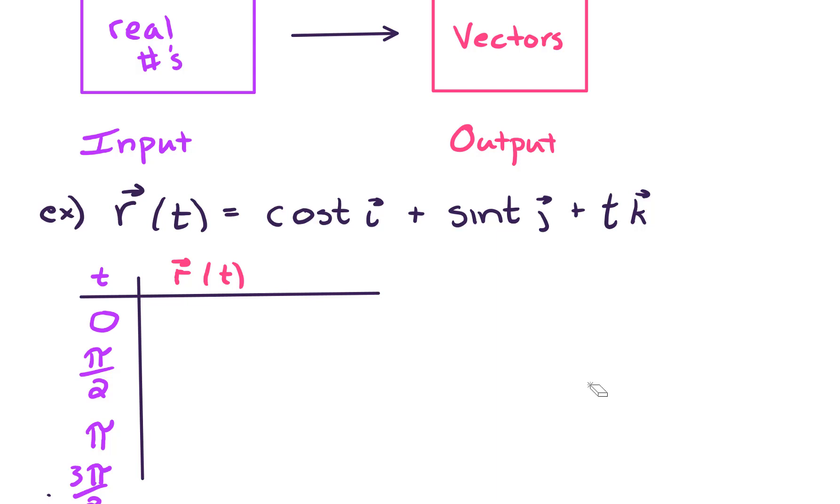At the top of the screen we've got our input real numbers. That's going to be our domain set. What kind of real numbers can we put into a function? And then our output, that's going to be a set of vectors. So here's a specific example. r of t equals cosine t i plus sine t j plus t k.